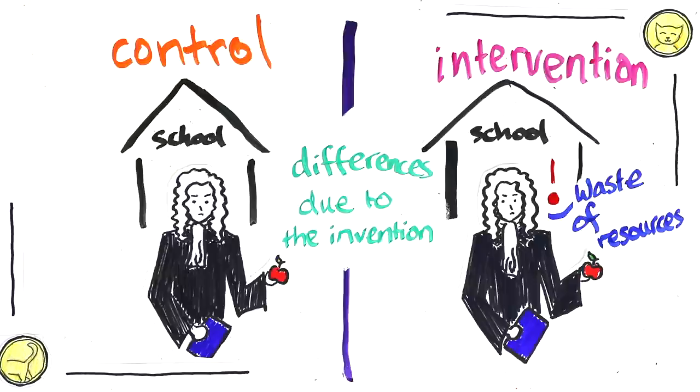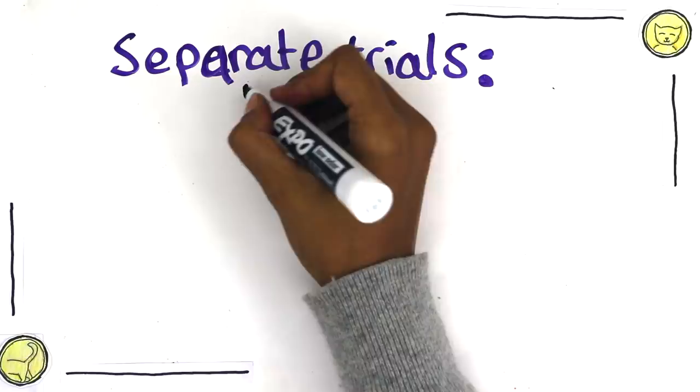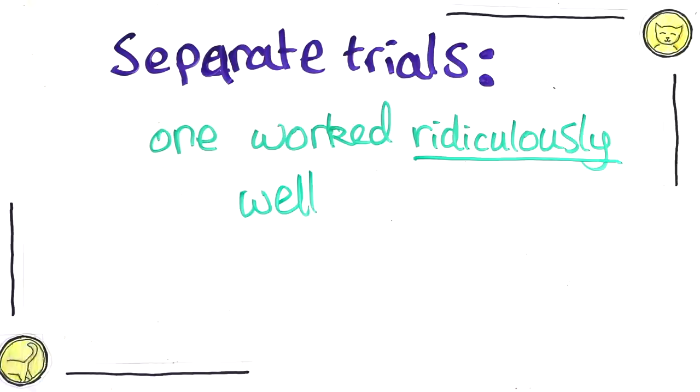Well, Kramer's idea was not to test all the different interventions at once, but to test them all in separate trials to figure out which was the most effective at improving the outcomes for students. To his surprise, one of these factors worked ridiculously well.